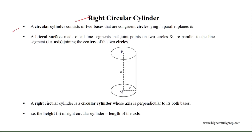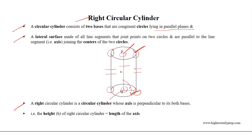A right circular cylinder consists of two bases that are congruent circles lying in parallel planes and a lateral surface made of all line segments that join points on the circles and are parallel to the line segment joining the centers of the circles. A right circular cylinder is a circular cylinder whose axis is perpendicular to both bases.